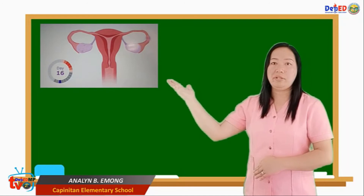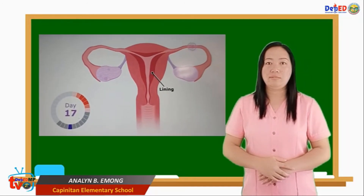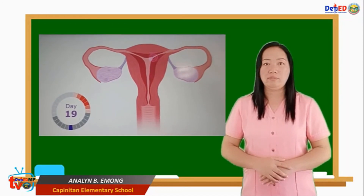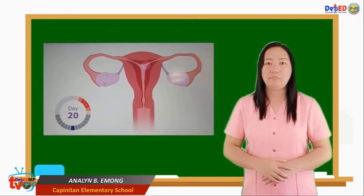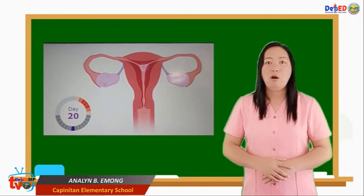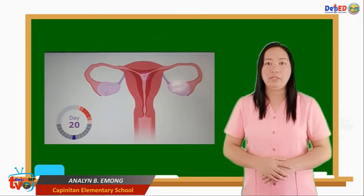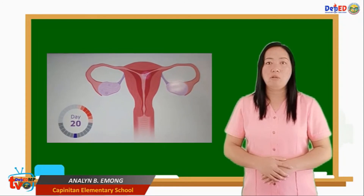Phase 3 is the fertile phase. The mature egg is released. This period is called ovulation. At day 14, ovulation takes place. Ovulation occurs when an egg is released by the ovary. The egg cell travels along the oviduct in search of a sperm cell.